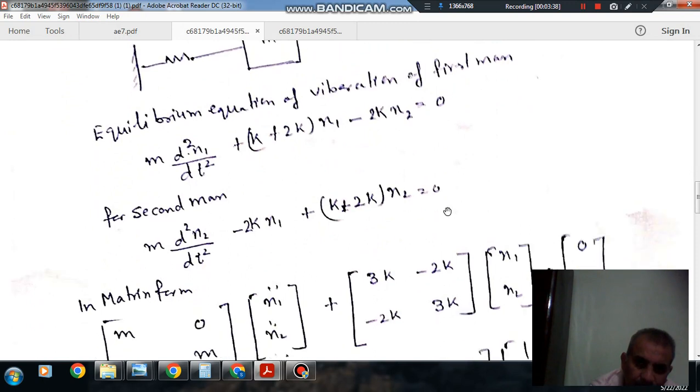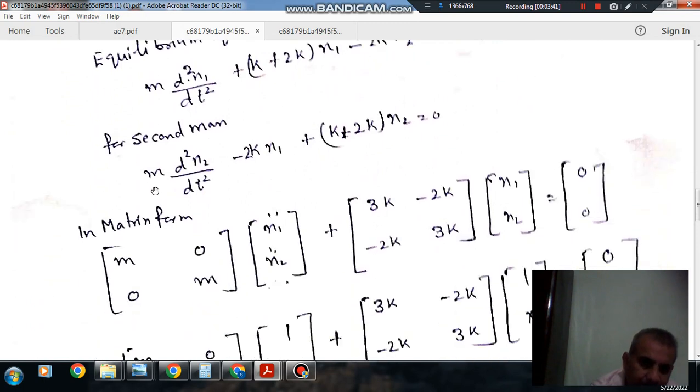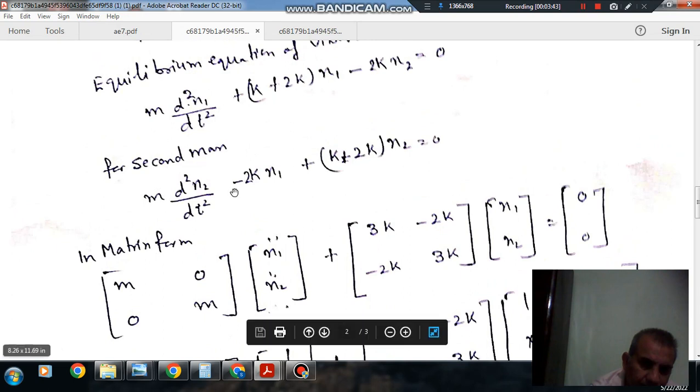And in matrix form, it can be written as: the mass matrix [m, 0; 0, m] times the acceleration vector [ẍ₁; ẍ₂], and the stiffness matrix is [3k, -2k; -2k, 3k] times the displacement vector [x₁; x₂].